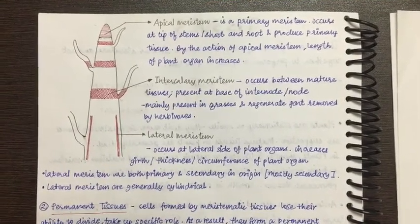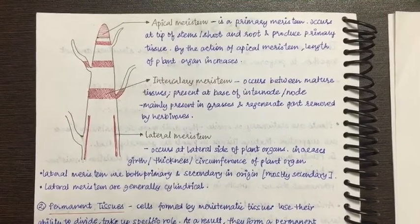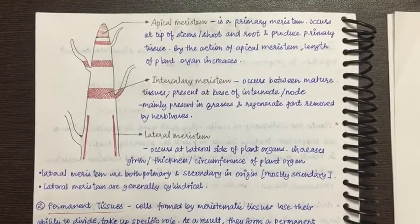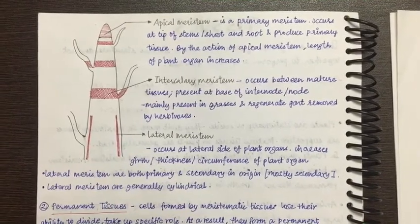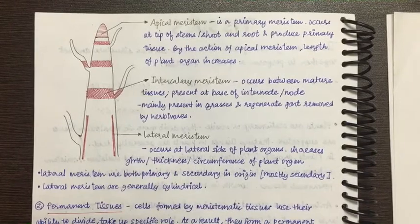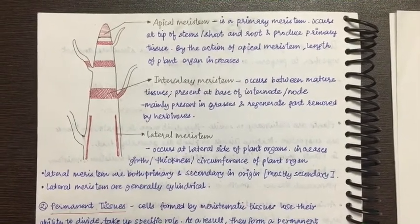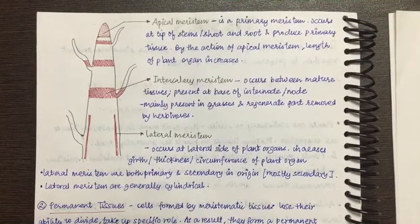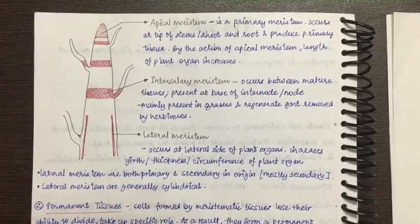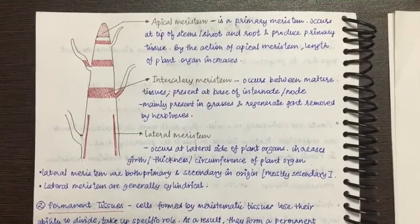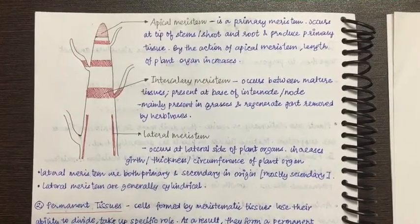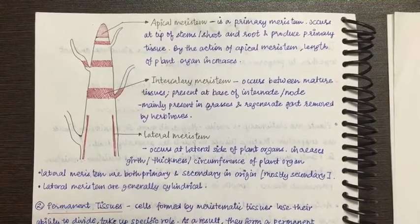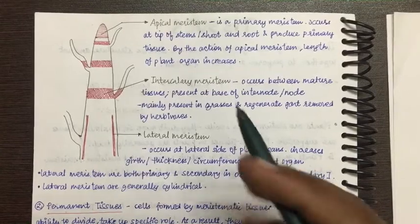Hello friends, we are studying Chapter 6 of Class 9 Science — Tissue. In the very first lecture we studied what tissue is: cells combine to form tissue, many tissues combine to form an organ, many organs work together to form an organ system, and many organ systems coordinate to make an organism. We also studied plant and animal tissues and their differences. Then we started studying plant tissues, beginning with meristematic tissue, which based on position is divided into three types: apical meristem, intercalary meristem, and lateral meristem.